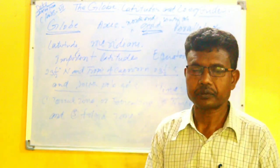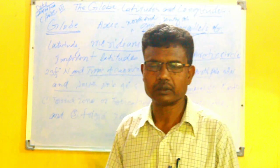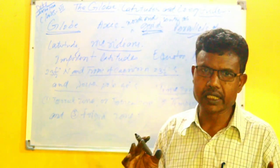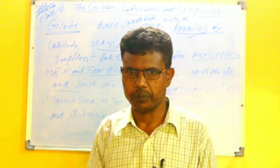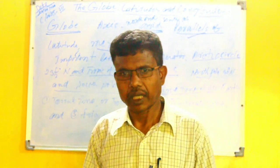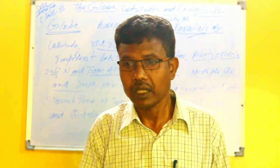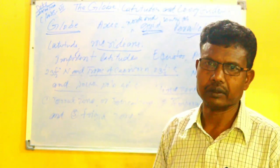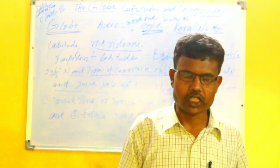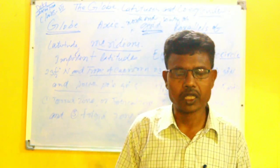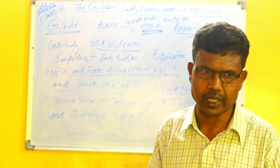The equator divides the whole Earth into two equal parts and is the greatest circle on the surface of the globe. The part north of the equator is called the northern hemisphere, and the southern part of the equator is known as the southern hemisphere.